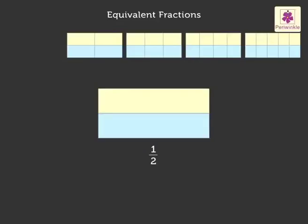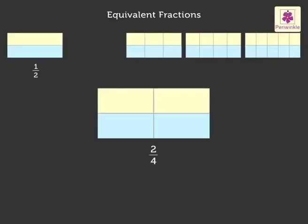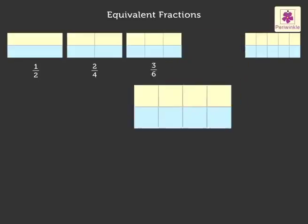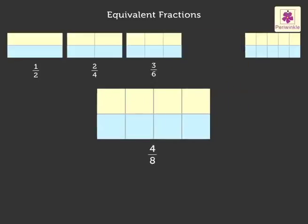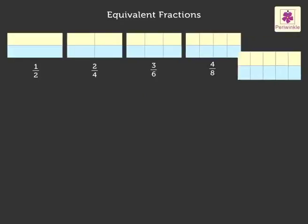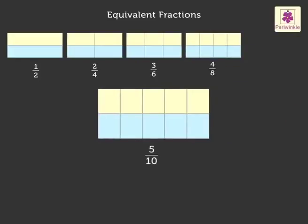Half of the rectangle is yellow. Two-fourths of the rectangle is yellow. Three-sixths of the rectangle is yellow. Four-eighth of the rectangle is yellow. Five-tenth of the rectangle is yellow.